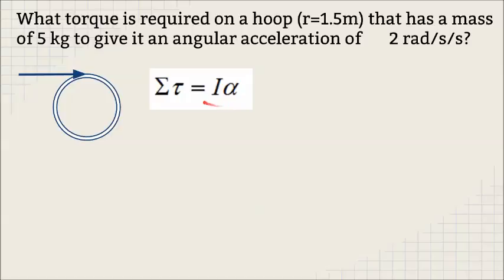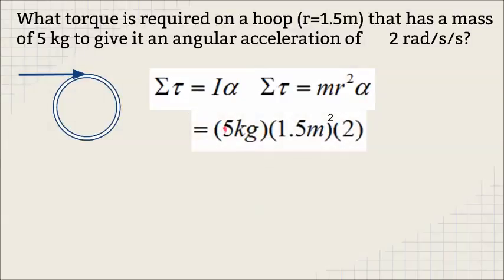We're going to take the formula we just formed, Newton's law for rotation, which is the sum of all torque equals IA. Because it's a hoop, we know what I is, and because we know what the angular acceleration wants to be, we can plug that in. We're going to use MR squared for I and plug in the numbers: 5 kilograms for the mass, 1.5 meters squared for the radius squared, and 2 for the radians per second squared. That comes up to 22.5 meter newtons for the torque to supply that hoop with an angular acceleration.